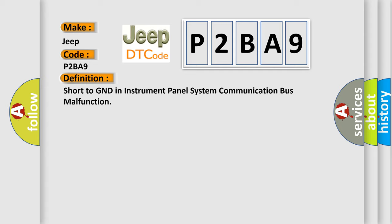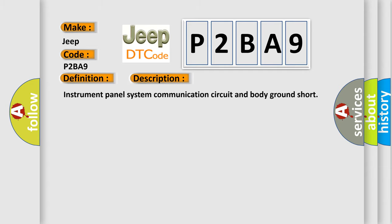And now this is a short description of this DTC code: Instrument panel system communication circuit and body ground short.